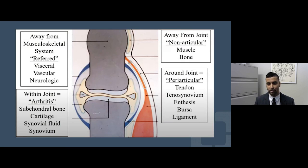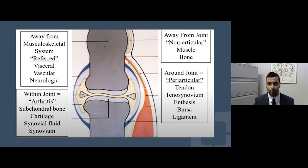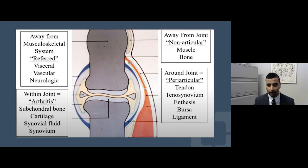We also have patients with pain over their forearms, neck muscles, or biceps — what we call non-articular myofascial pain. Additionally, patients have referred pain, for example from compression on the sciatic nerve causing leg pain during walking, which we call referred musculoskeletal pain.